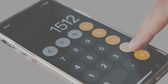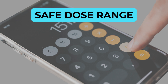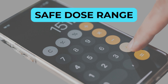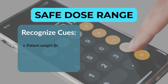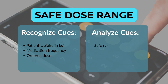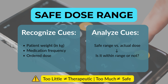Before you even touch a calculator, you need to know what a safe dose range is and why it matters more in pediatrics than anywhere else. Unlike adults, pediatric meds are dosed by weight, not age. That means every med order must fall within a calculated safe range measured in milligrams per kilogram per day, divided by the number of doses per day. If you skip this step, you risk giving too little to be therapeutic or too much to be safe.